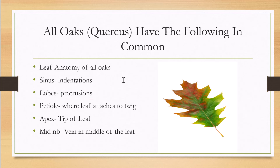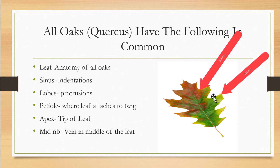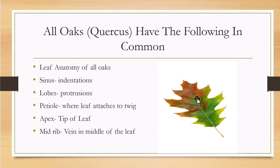Now for leaf anatomy of the oaks. They all have sinuses and lobes. The sinuses are the indentations you see on the leaf, and the lobes are the protrusions. You'll hear me refer to five to seven lobes, or seven to nine lobes — we're just counting the number of lobes. The sinuses are the deep indentions. The petiole is at the bottom of the leaf where it attaches to the twig.